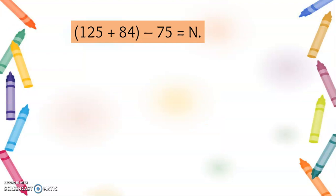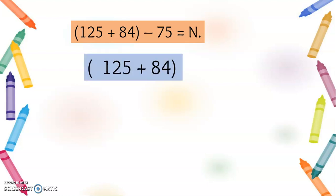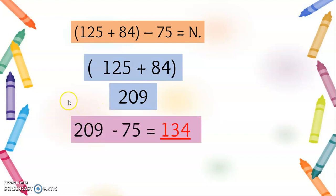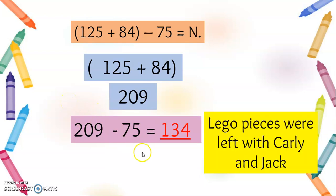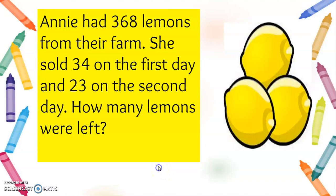Again: (125 + 84) − 75 = N. So 125 plus 84 equals 209, and 209 minus 75 equals 134. So 134 Lego pieces were left with Carly and Jack.